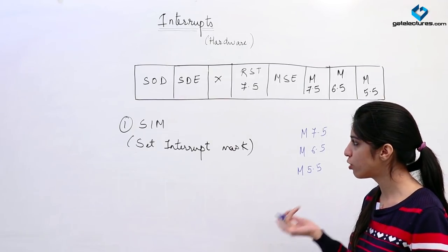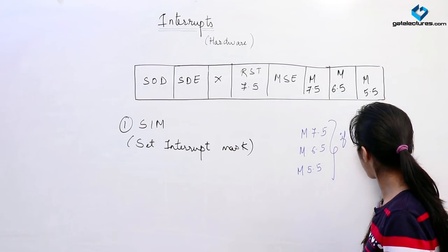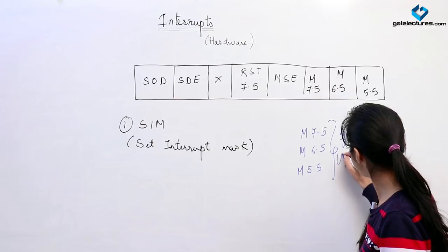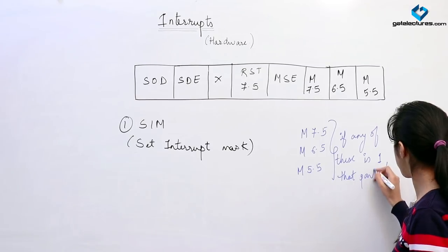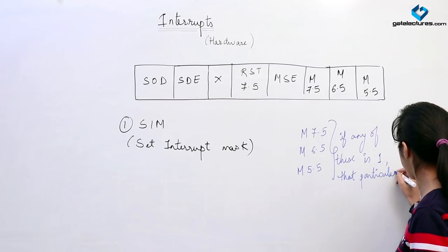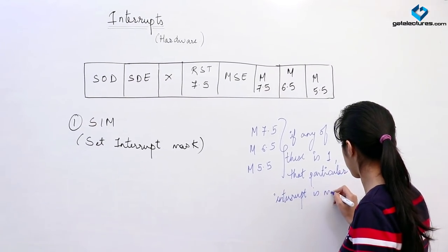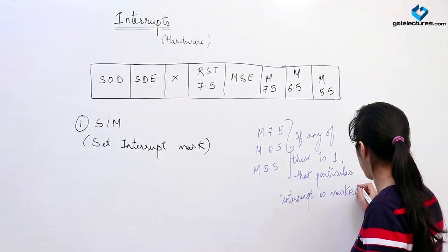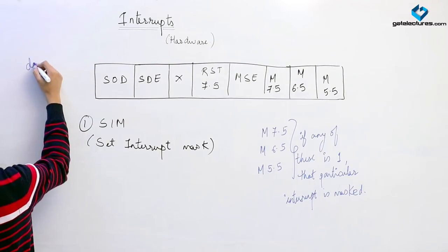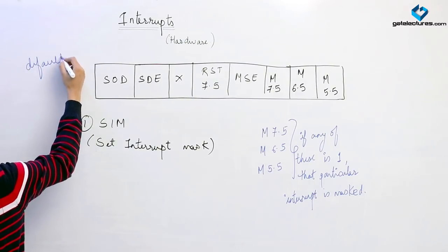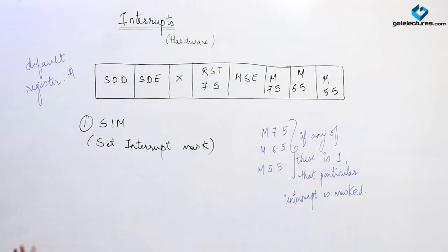But suppose you want to mask one particular interrupt, then we can use these mask bits. If any of these is 1, then that particular interrupt is masked. The default register for doing this is the accumulator.